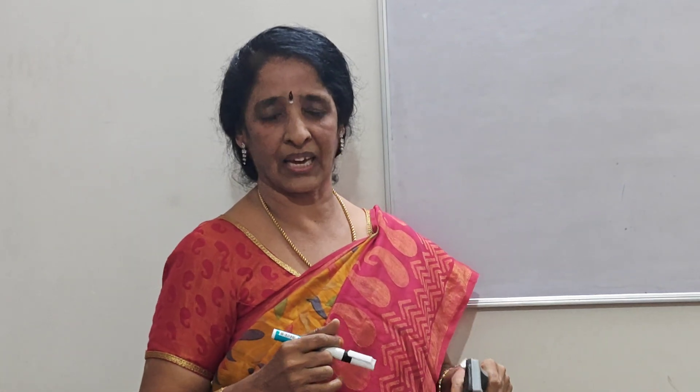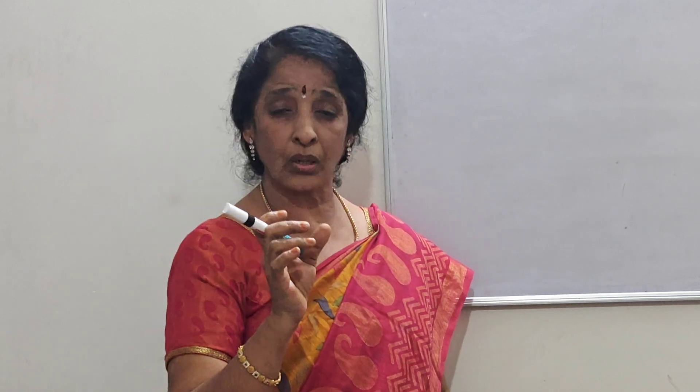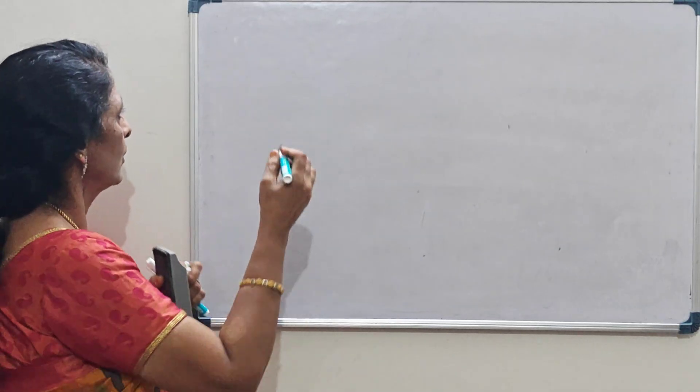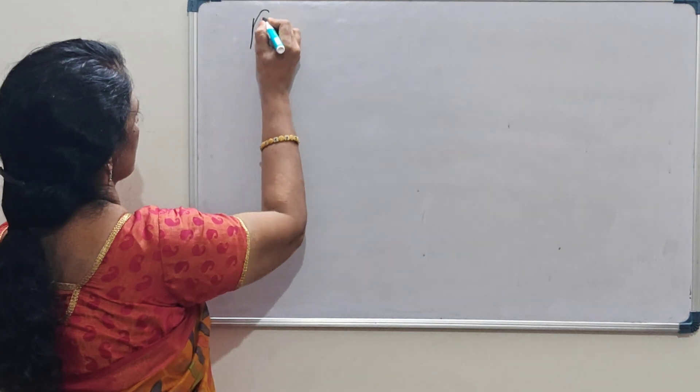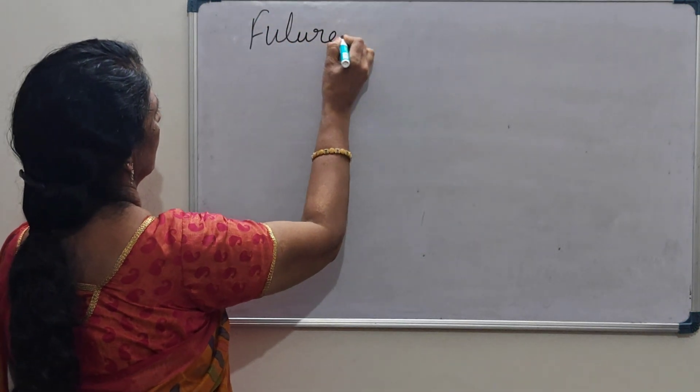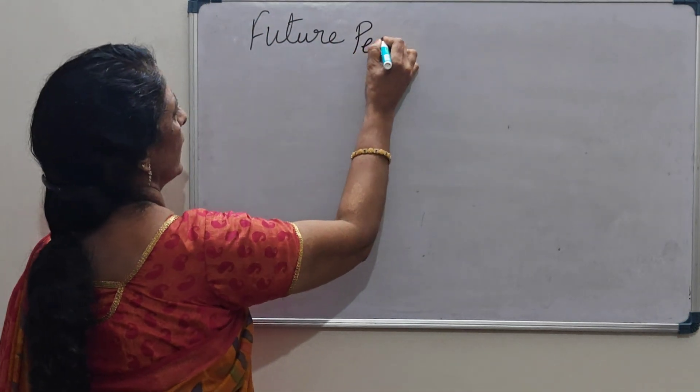Today I'm going to teach Future Perfect Continuous Tense. It describes an action that will have been in progress for a period of time up to a specific point in the future. We'll see the rules first.